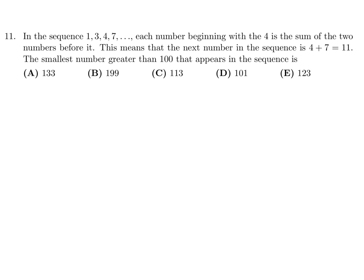In the sequence 1, 3, 4, 7, each number beginning with the 4 is the sum of the two numbers before it. This means that the next number in the sequence is 4 plus 7, which is 11.